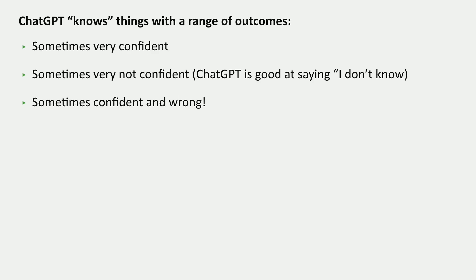When you ask ChatGPT a question, there are a few possible outcomes. It's sometimes very competent and gives you the right answer. Sometimes it's not competent, and one of the things that the human feedback process gives ChatGPT is the ability to say "I don't know." So for the 48th president, it says something like "I don't know" and notes how many presidents the United States has actually had. But sometimes it's competent and wrong. And it's very hard to actually measure its performance honestly.